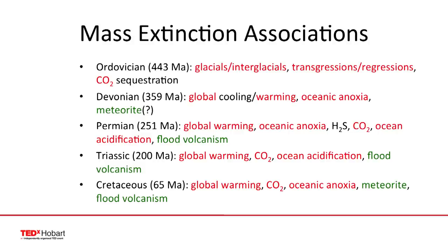Looking at the characteristics of these mass extinctions, I've highlighted in red some features that sound familiar with what's happening today: glacial-interglacial cycles, transgressions and regressions — the ebbing and flowing of sea level — carbon dioxide changes, global warming, oceanic anoxia when the oceans lose their oxygen, and ocean acidification. In green, I've highlighted the suspected drivers of these extinctions. My own research involves both impacts from outer space and massive volcanism on a scale we don't see happening on Earth today.